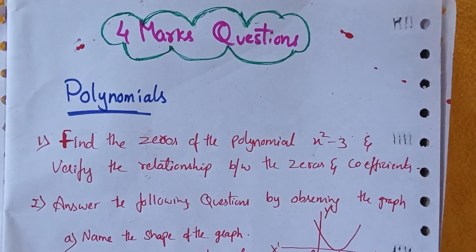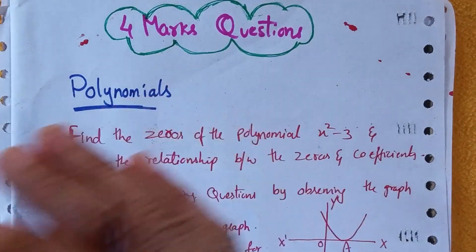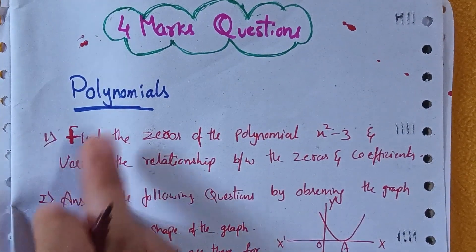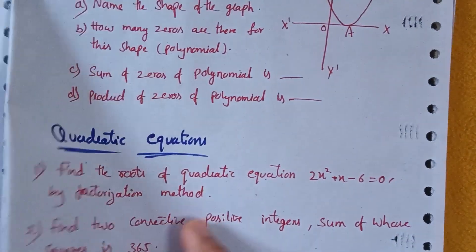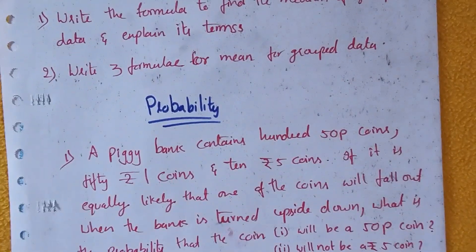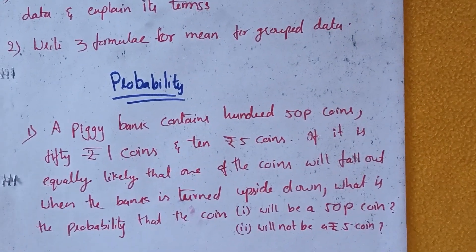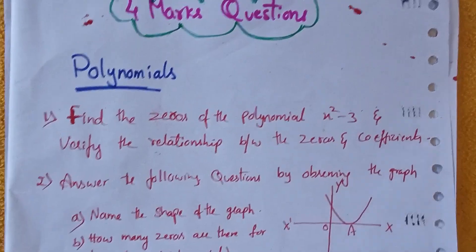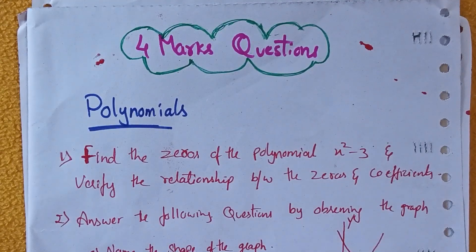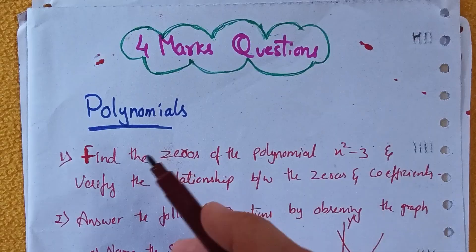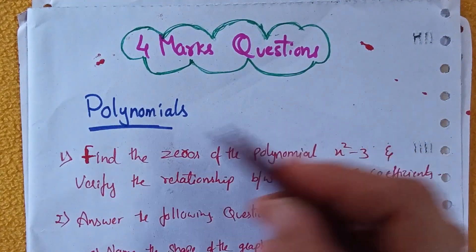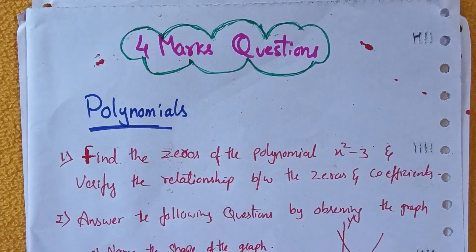Let's start with four marks questions. From the first chapter, Real Numbers, there is a chance of getting eight marks, two marks, and one mark questions, but no four marks question. The important chapters for four marks are: Polynomials, Quadratic Equations, Arithmetic Progressions, Introduction to Trigonometry, Statistics, and Probability. Please mark all these questions in your textbook and class notes so revision is easy.